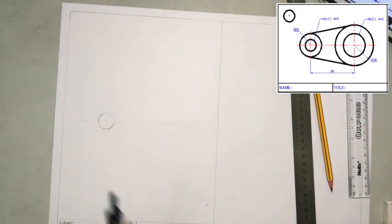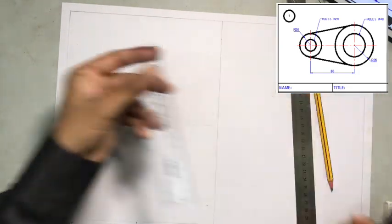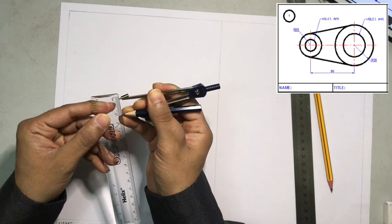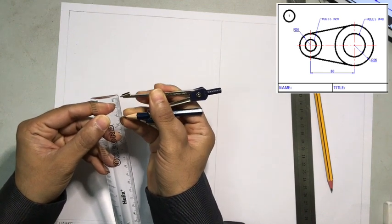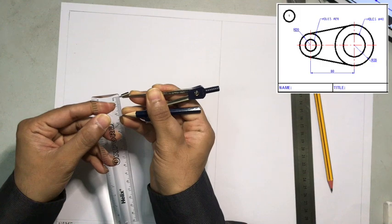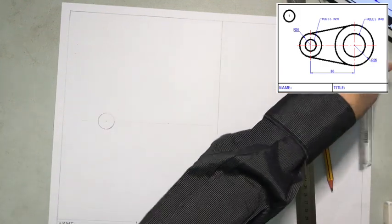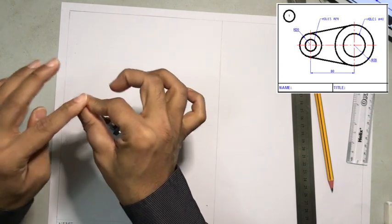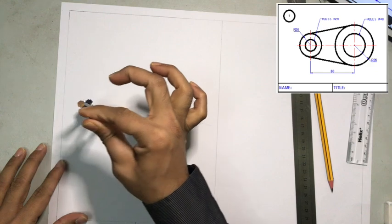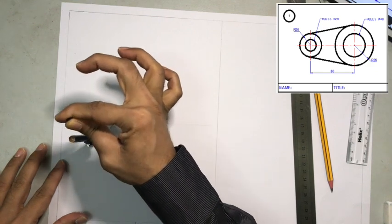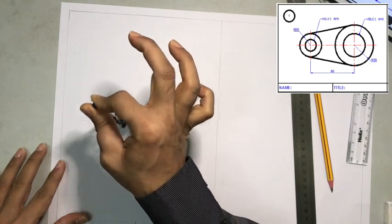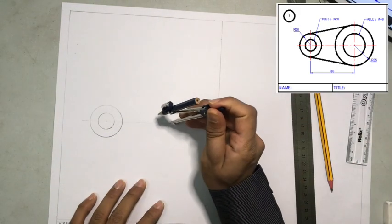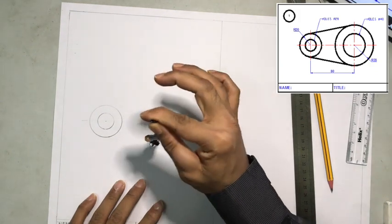It's a little bit tricky when the circles become smaller but for bigger circles that is easy. My next circle is going to be of 2 centimeters or 20 millimeters radius. I measured at 20 from the center, hold the tip of the compass and then draw a circle. Likewise, with the same radius I'm drawing another circle here.